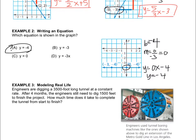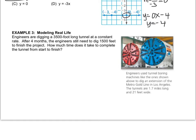Last one, example 3. Engineers are digging a 3,500 foot long tunnel at a constant rate. After 4 months, the engineers still need to dig 1,500 feet to finish. They start with 3,500. Okay. How much time does it take to complete the tunnel from start to finish? So, let's see what we got.